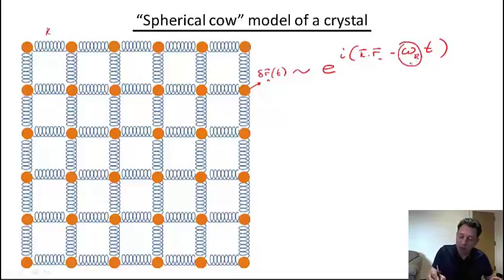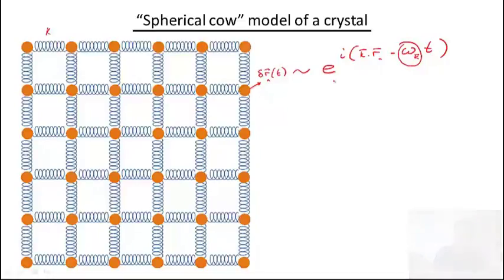But this ω is itself a function of k. And so to find this so-called dispersion, phonon dispersion, is the main question that appears in the context of this problem, and this is what is going to be of interest to us.